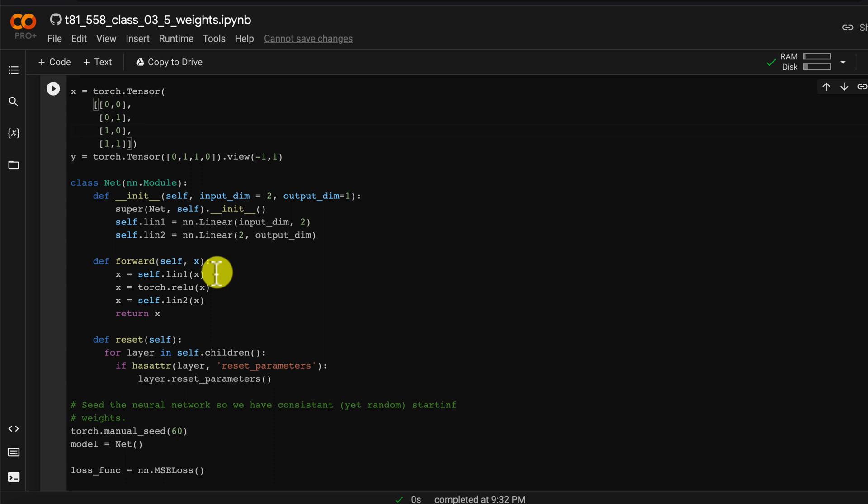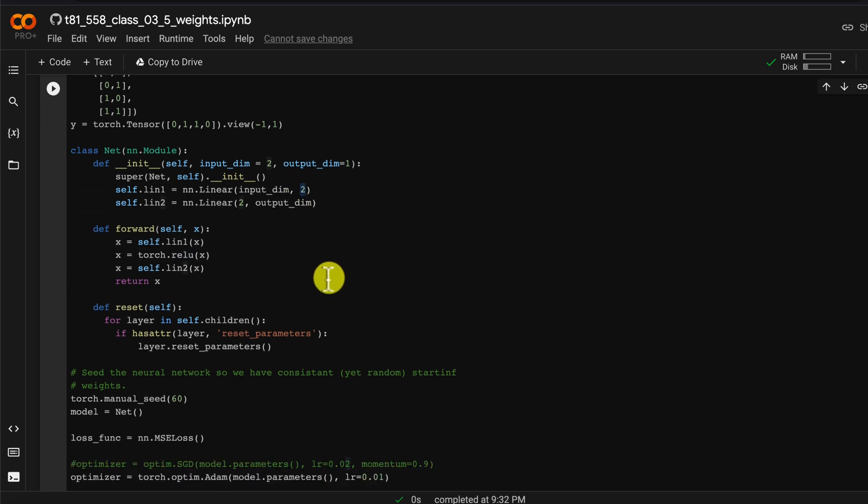We are going to run this neural network. It's just like the ones that we have seen before. It makes use of a rectified linear unit activation function and it's pretty simple in structure. It's just got two hidden neurons on one single hidden layer.